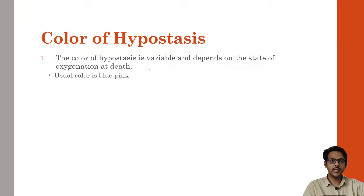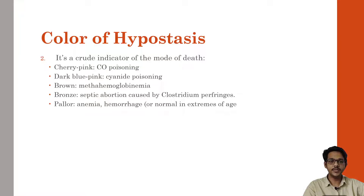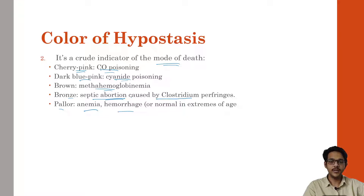Color of hypostasis is variable and depends on the state of oxygenation of the body. Mainly it is usually bluish-pink in color. But it is also a crude indicator of the mode of death, since the color may indicate the pathology of the body. For example, if it is cherry pink in color, it usually indicates carbon monoxide poisoning. Dark bluish-pink color is seen in cyanide poisoning. Brown color is seen in methemoglobinemia, and also in septic abortion caused by Clostridium perfringens. Paler, less pink color may be seen in anemia or hemorrhage.